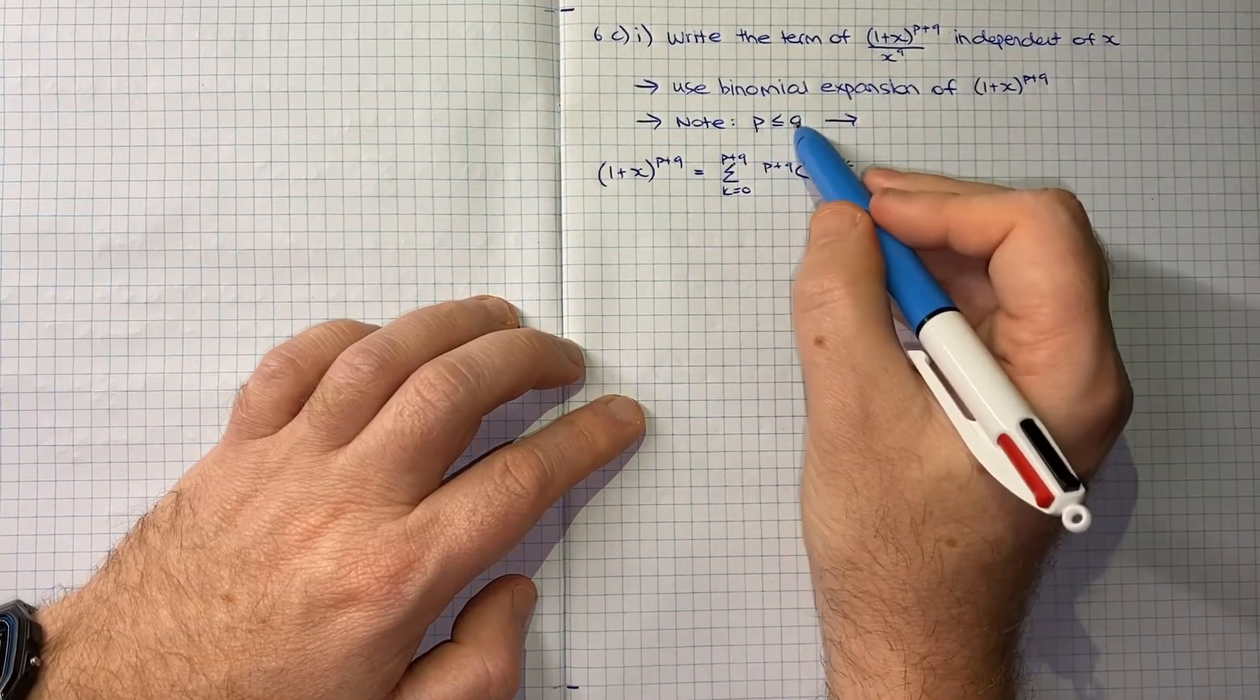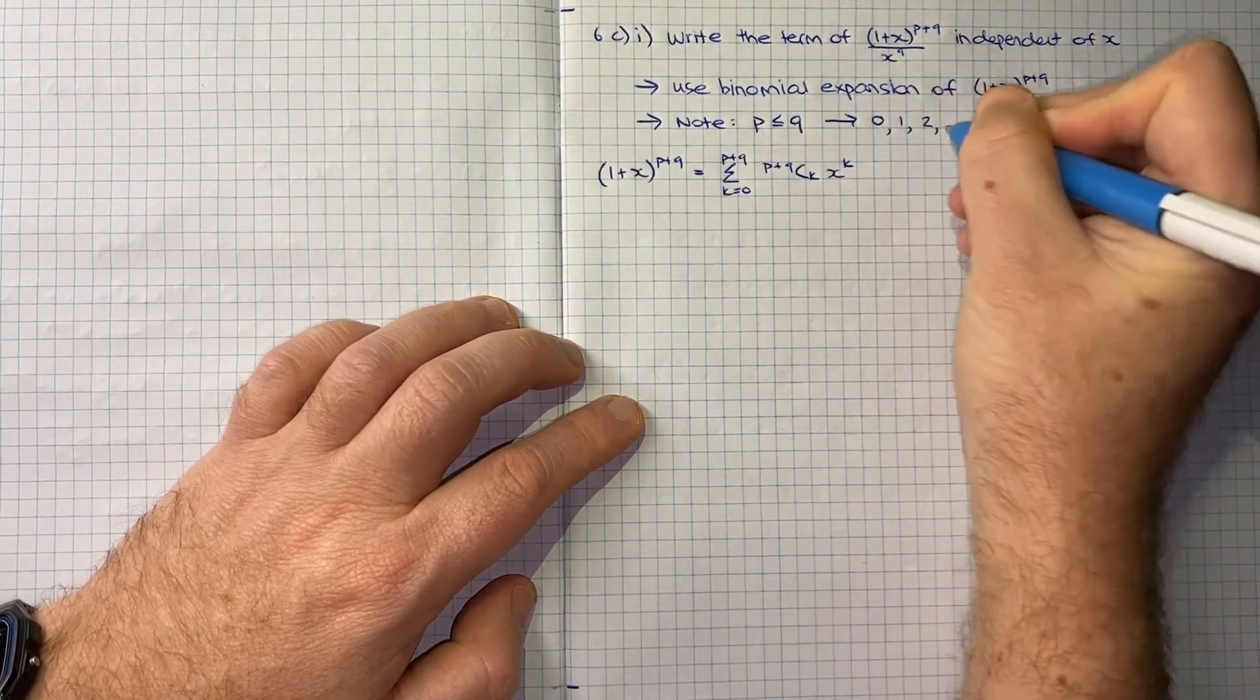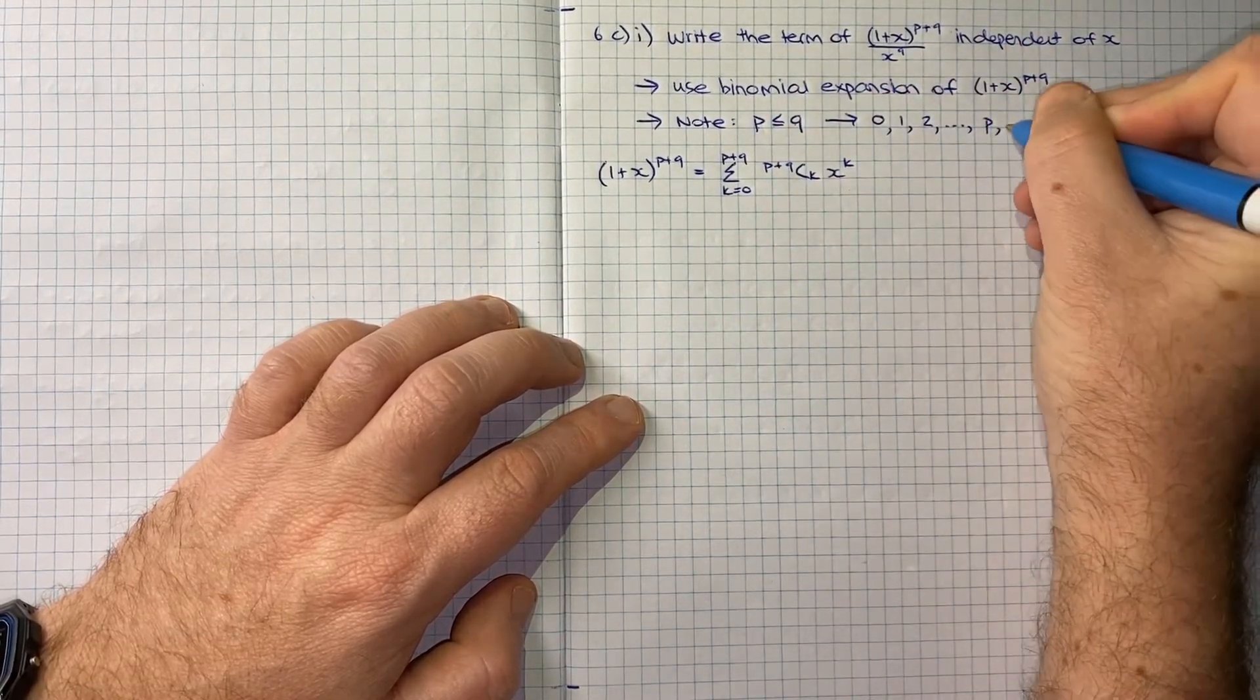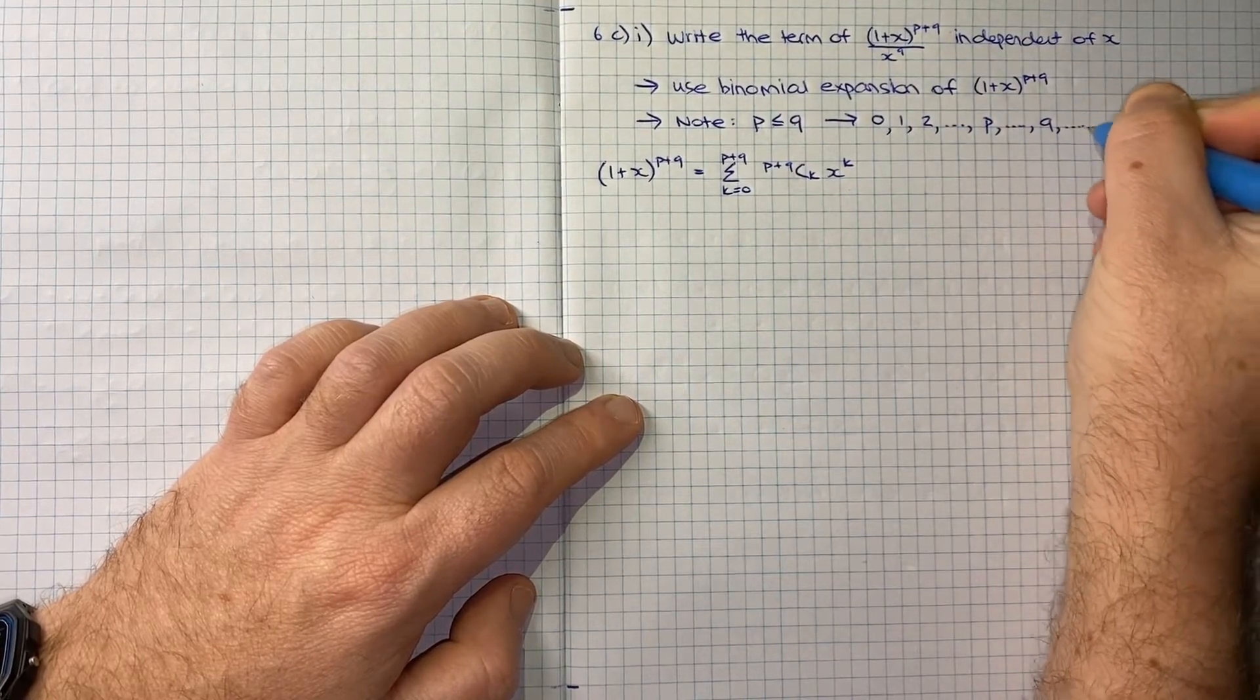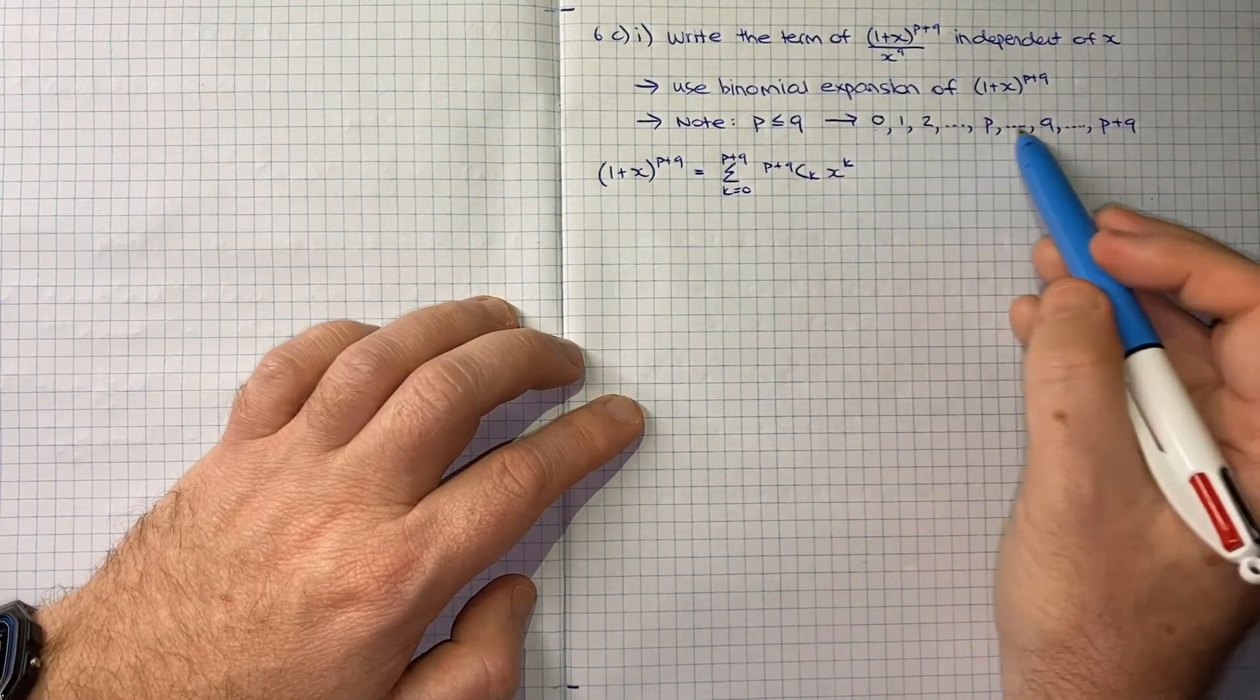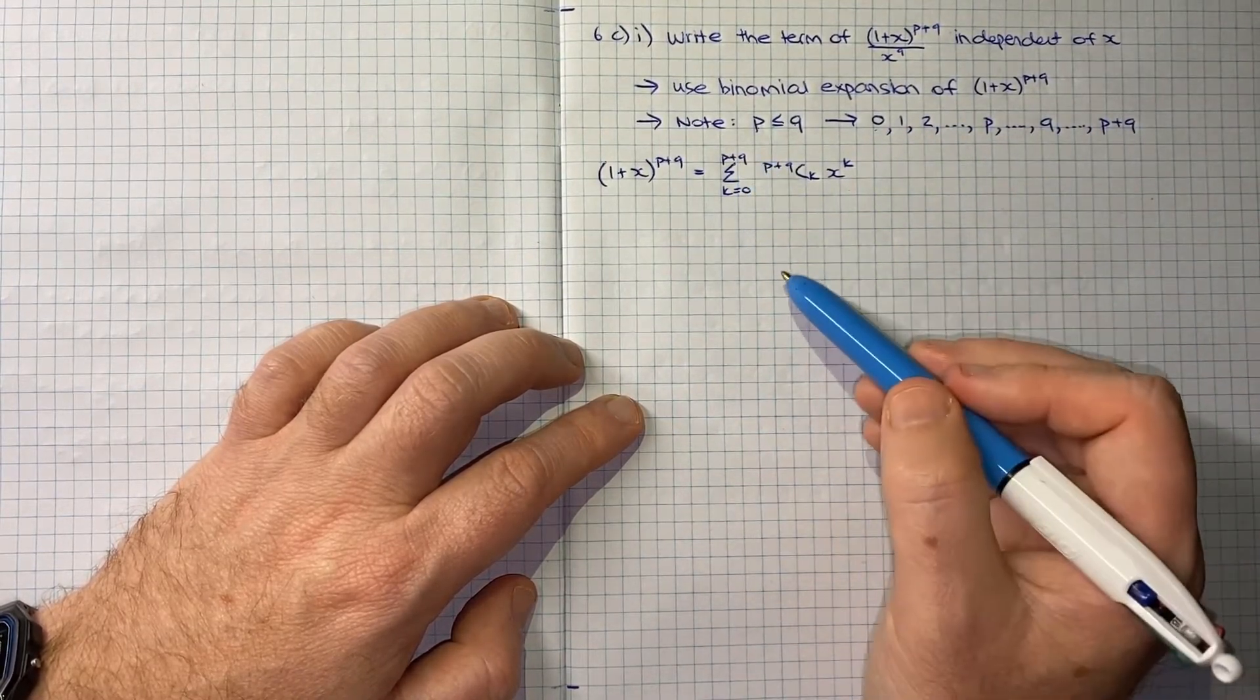It's worth noting that since p is less than or equal to q, when we're counting from 0 up to p plus q, we're inevitably going to hit p and q by themselves before we get to p plus q. We know we're going to hit p before q. So the counting will go 0, 1, 2, and so on up to first p, then keep going to q, and eventually hit p plus q.